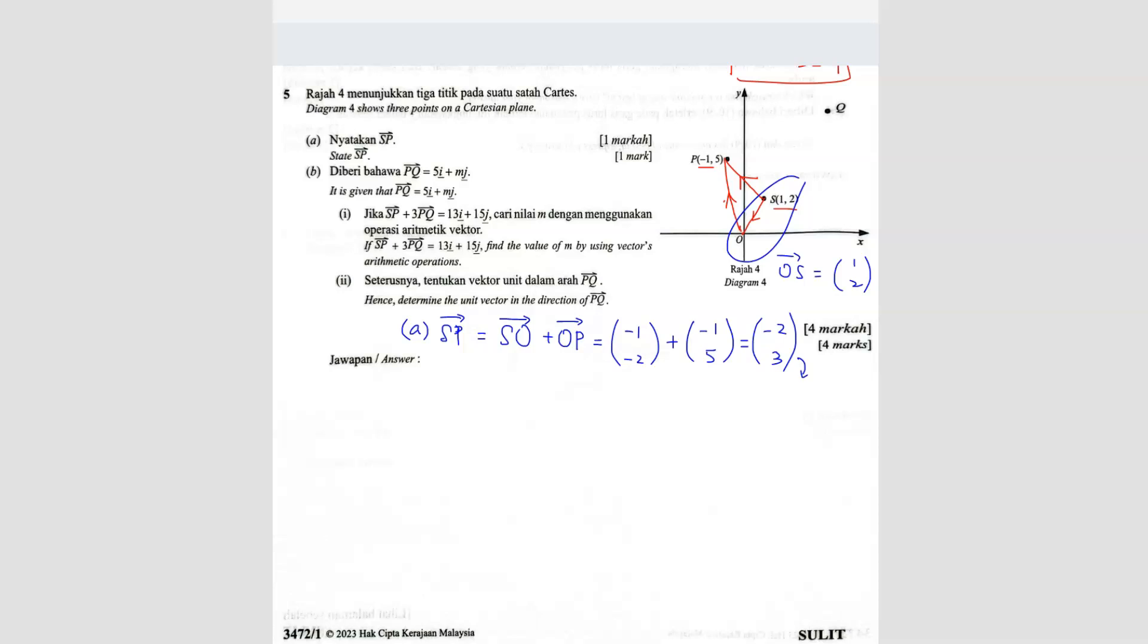So you can also write in the IJ form. So it's negative 2I plus 3J. So this is your answer.